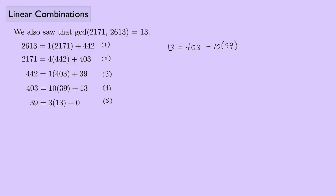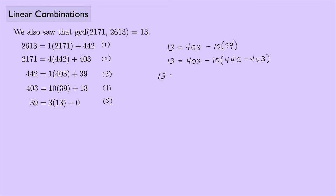From equation 3, I know 39 is 442 minus 403. Plugging that in: 13 equals 403 minus 10 times (442 minus 403). Distributing the negative 10 gives a positive 10 times 403, so combining gives 11 times 403 minus 10 times 442.